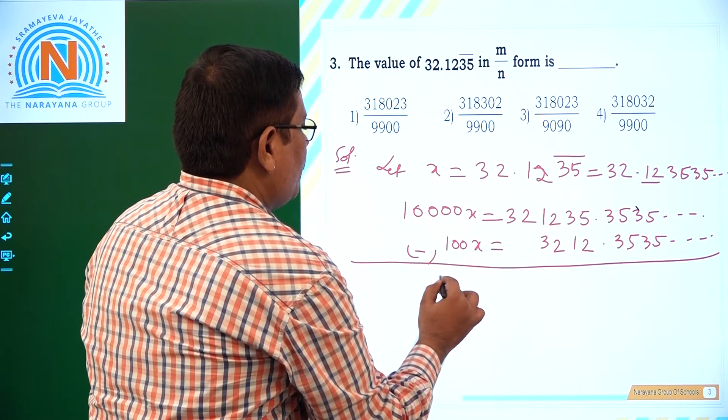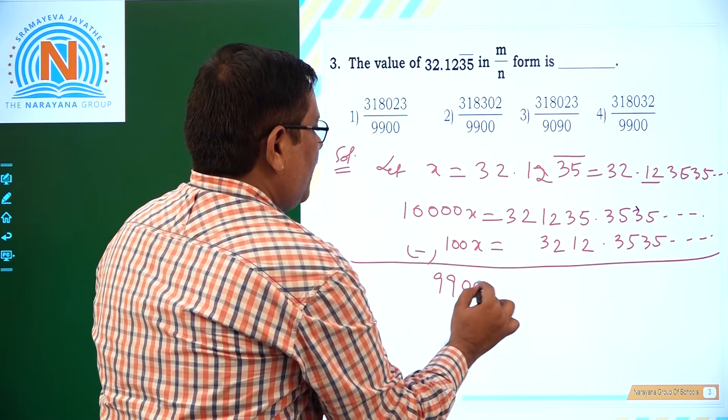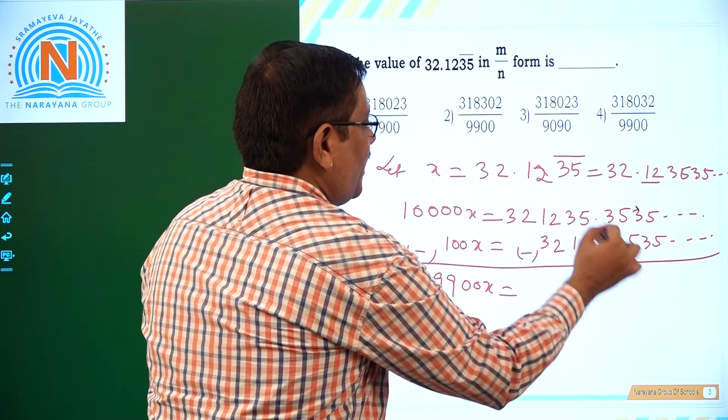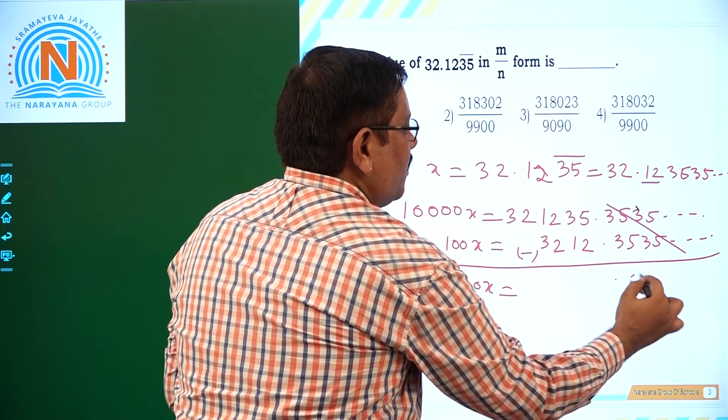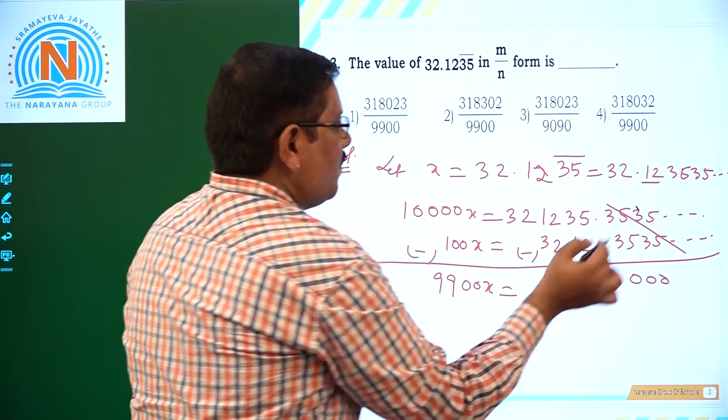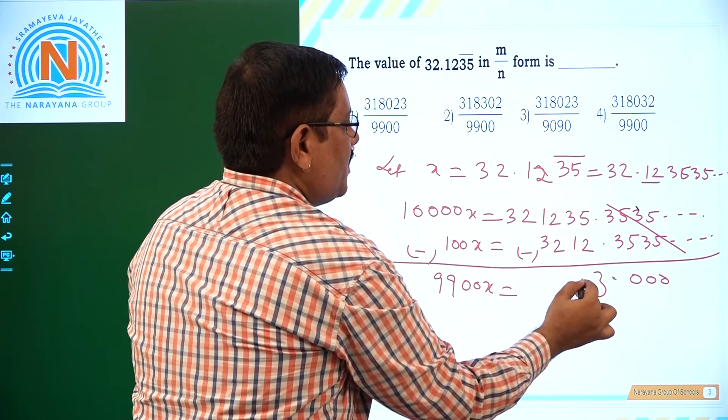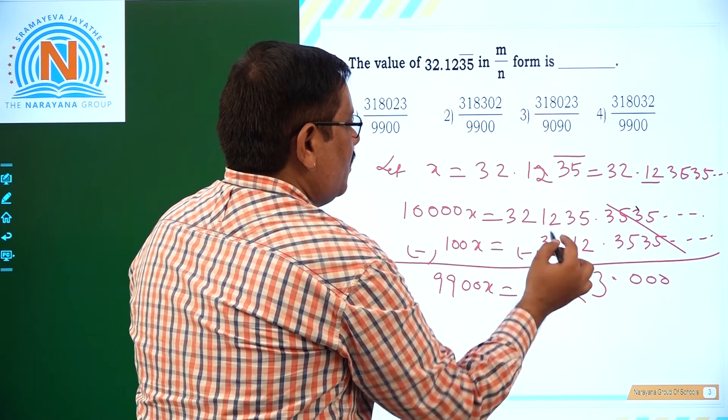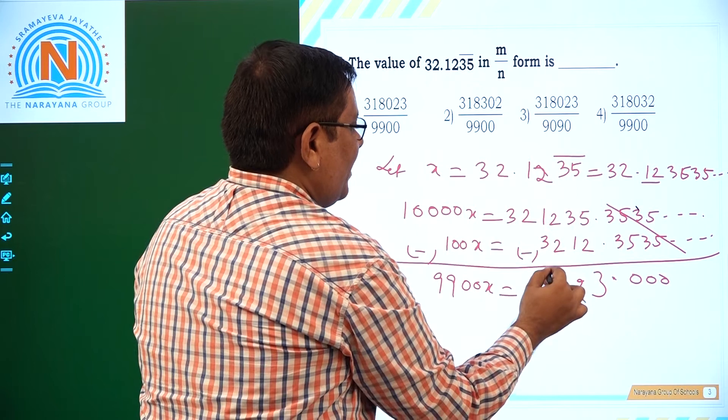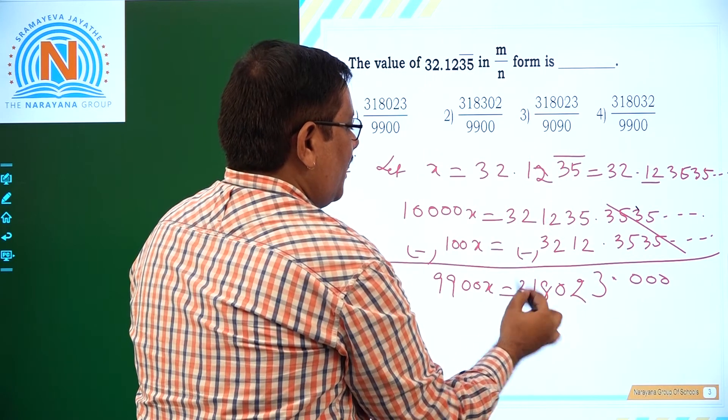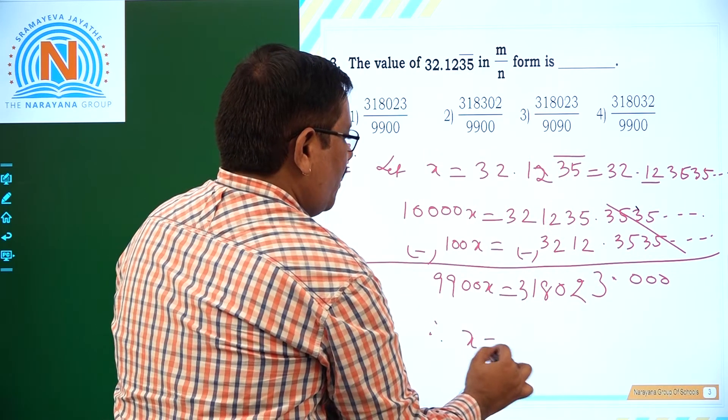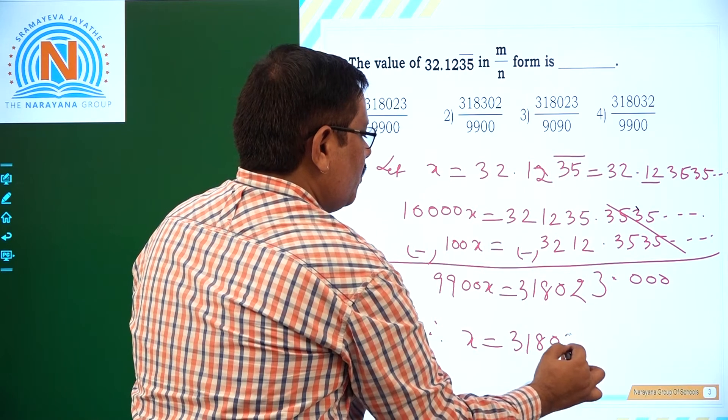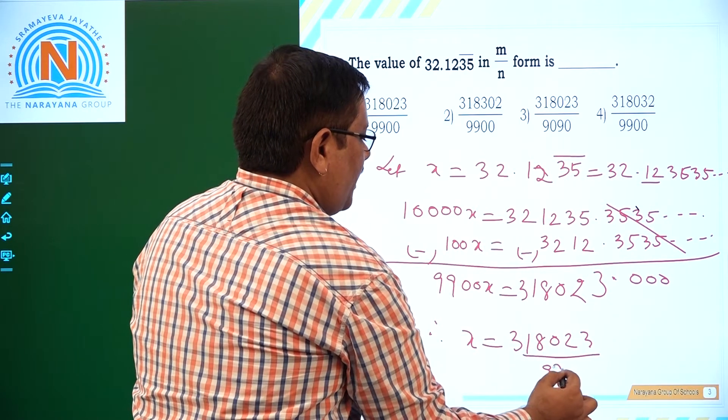If you take minus here, it is going to be 9900x. That is equal to here. We have to subtract. Of course, here this entire part becomes cancelled. So it is 0, 0, 0. It is of no use. Here 5 minus 2, 3, 3 minus 1, 2, 2 minus 2, 0. And here 11 minus 3, that is 8. So that is 1. So therefore, x is going to be 31023 upon 9900.